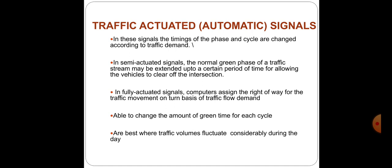Traffic actuated automatic signals are those where the timings of the phase and cycle are changed based on traffic demand. In semi-actuated traffic signals, the normal green phase of an approach may be extended to allow a few more vehicles that are closely approaching to clear the intersection. In fully actuated traffic signals, detectors and computers assign the right of way for various traffic movements based on demand and predetermined programming. One disadvantage is that this type of system is very costly to install at all intersections.